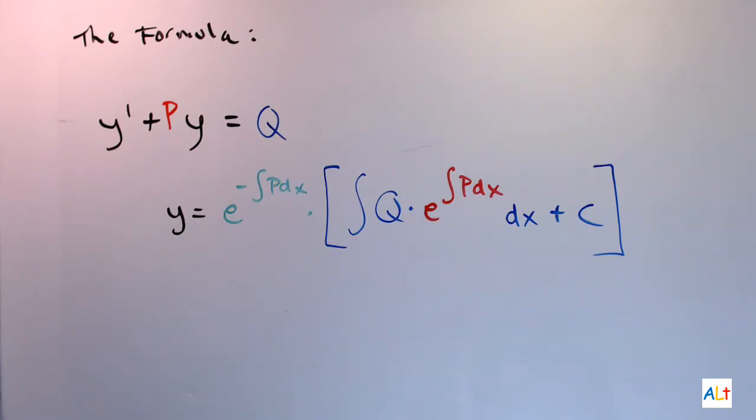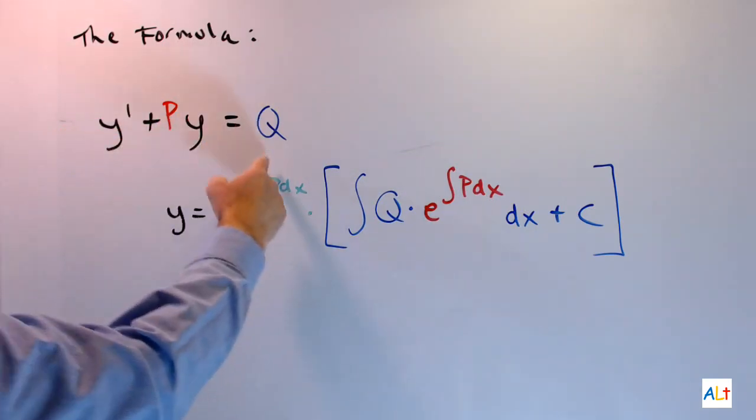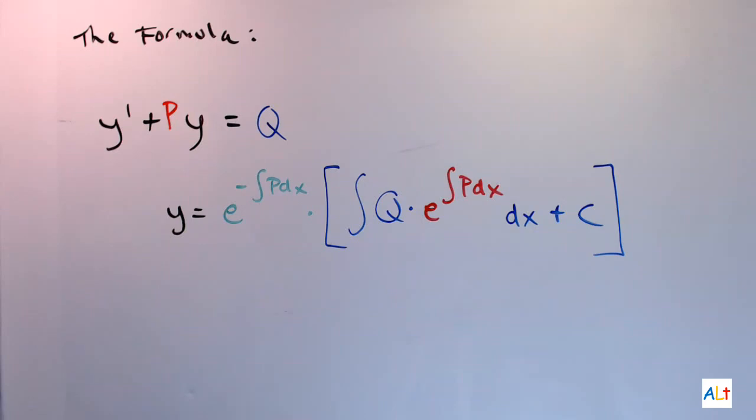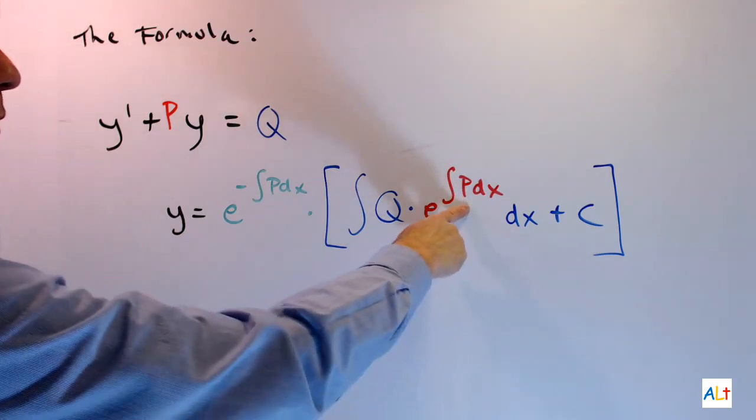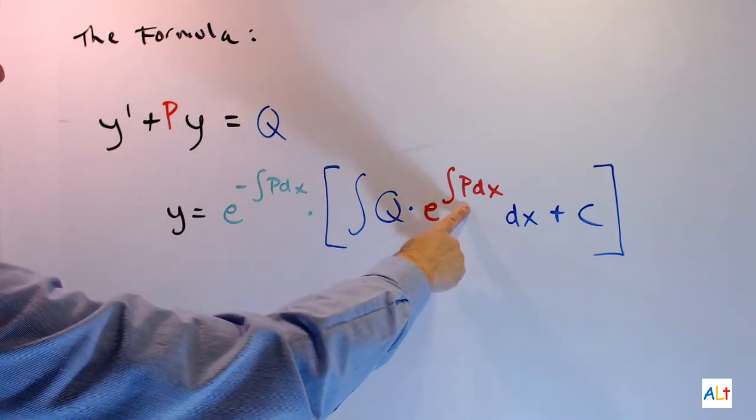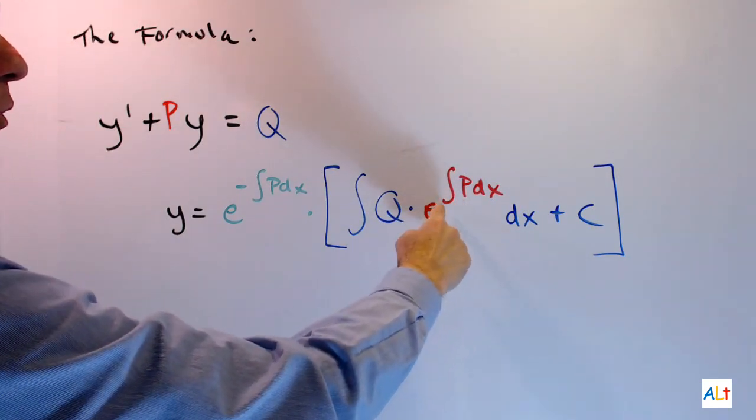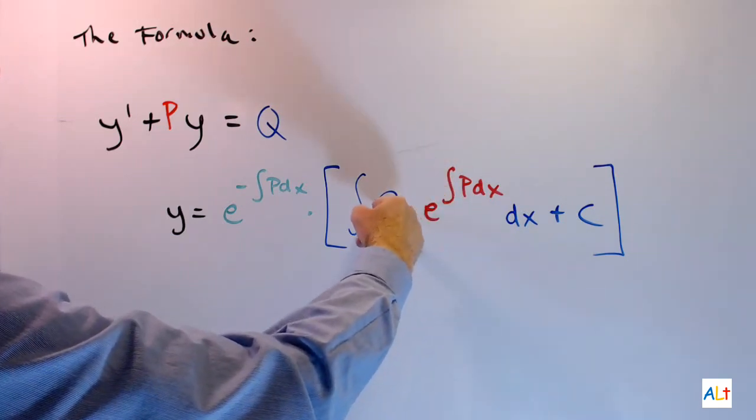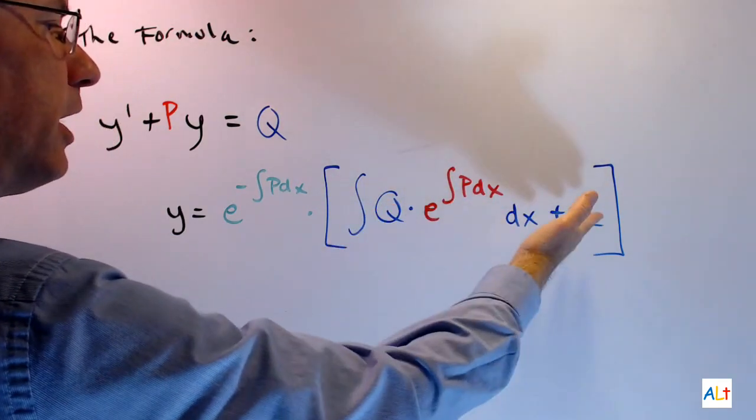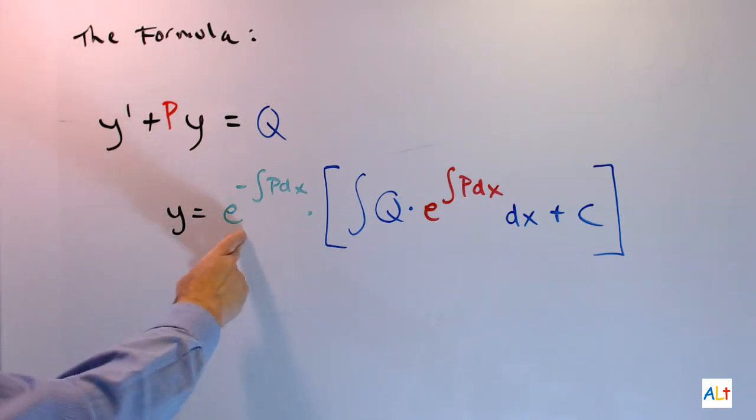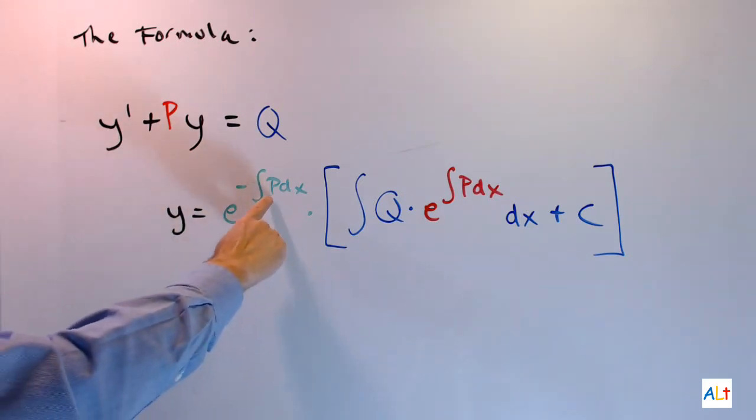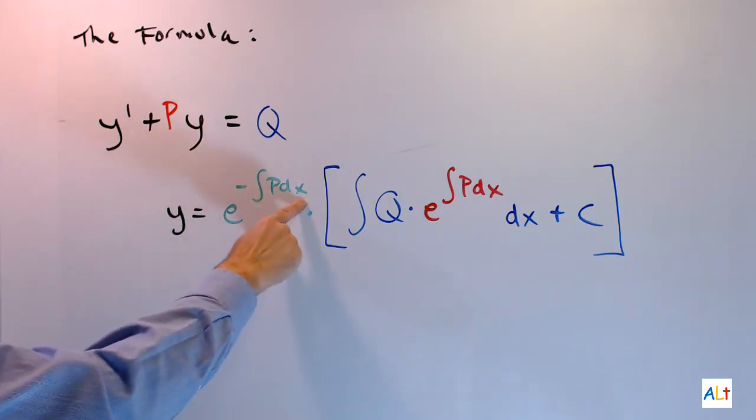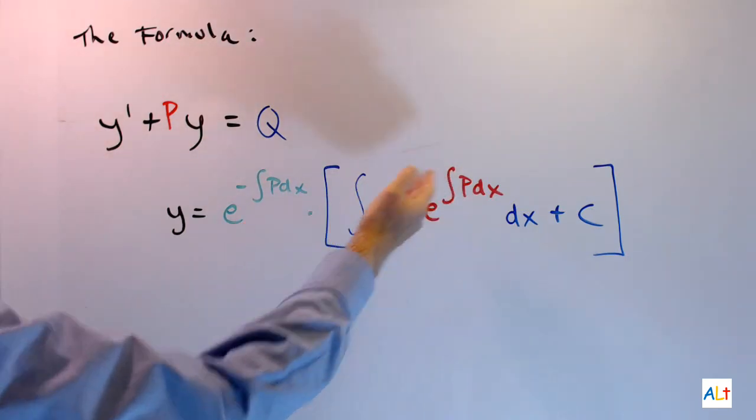Now, what you should not do is just substitute in P and Q and go for it, because you're going to get a huge mess. Instead, you should tackle this piecemeal. Start with this P integral, solve that, and then write out this exponential expression with the Q, and do this blue integral next, and finally multiply by this green term. And, of course, you don't need to repeat this integral. You already know what the answer to that is.